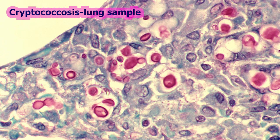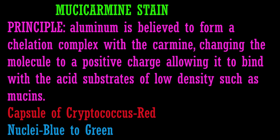Mucicarmine stain is intended for the histological visualization of acid mucopolysaccharides in tissue sections. Mucicarmine stains the mucopolysaccharide capsule of Cryptococcus neoformans in red color. Thank you for watching.